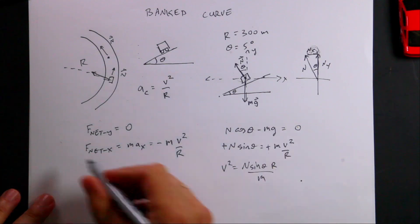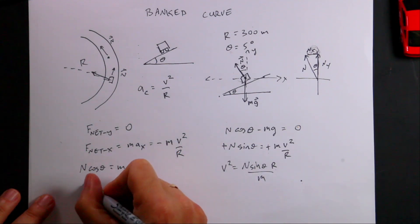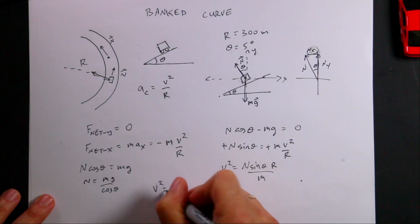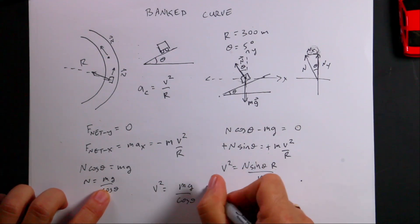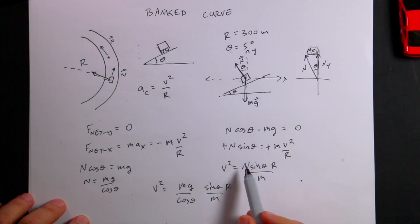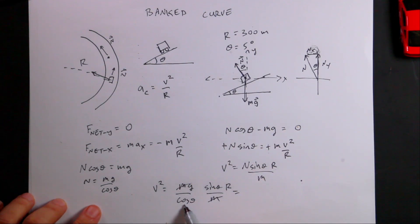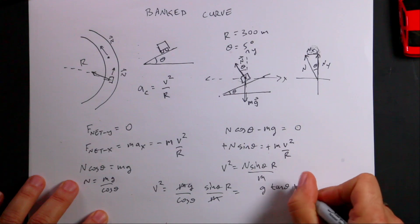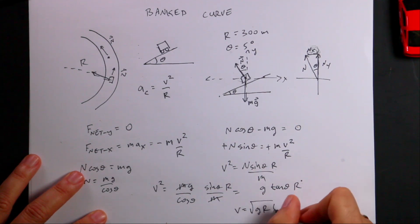I can solve for n over here. Let's add mg to both sides, I get n cos theta equals mg. Now I can divide both sides by cos theta. N equals mg over cos theta, and I can plug that in over here. I get v squared equals n, but I can put this in: mg over cos theta, and then I have sin theta, and then I have r, and then I have an over m. So all I did was substitute for n. I put in this stuff, and you'll notice the mass cancels and I have sine over cosine. I can write that as tangent theta. So I get g tangent theta r. Now I need to take the square root of both sides, and I get v equals the square root of g r tangent theta.